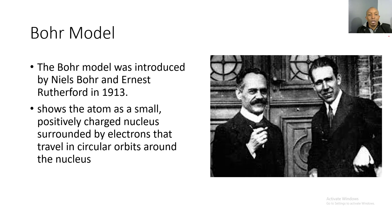One of the main things we're going to talk about is the Bohr model, which was introduced by Niels Bohr and Ernest Rutherford in 1913. It shows that the atom is a small positively charged nucleus surrounded by electrons that travel in circular orbits. The nucleus is positively charged because protons have a positive charge and neutrons have no charge, so the proton charge is dominant.